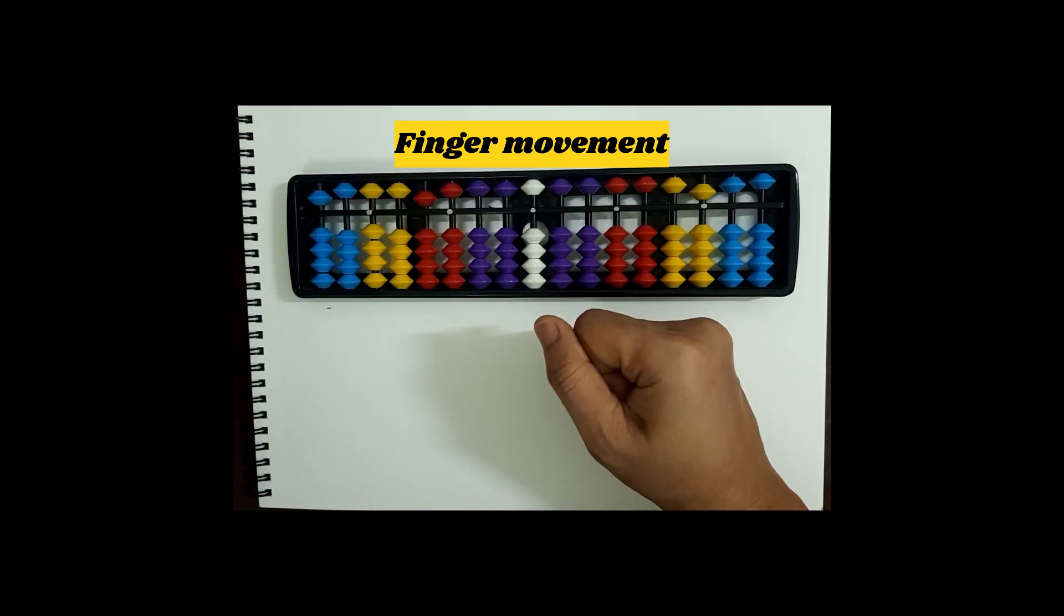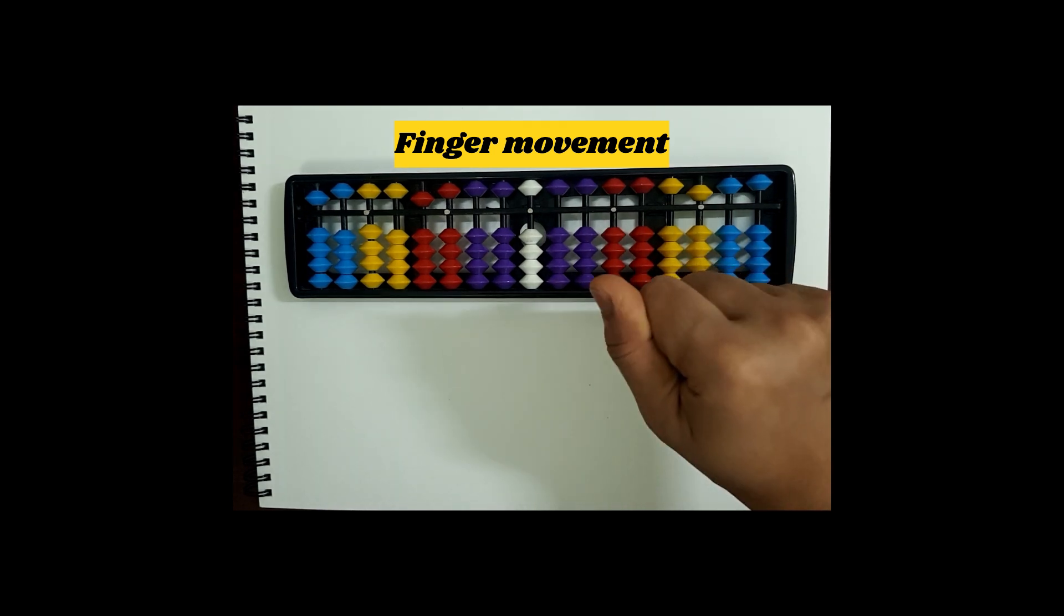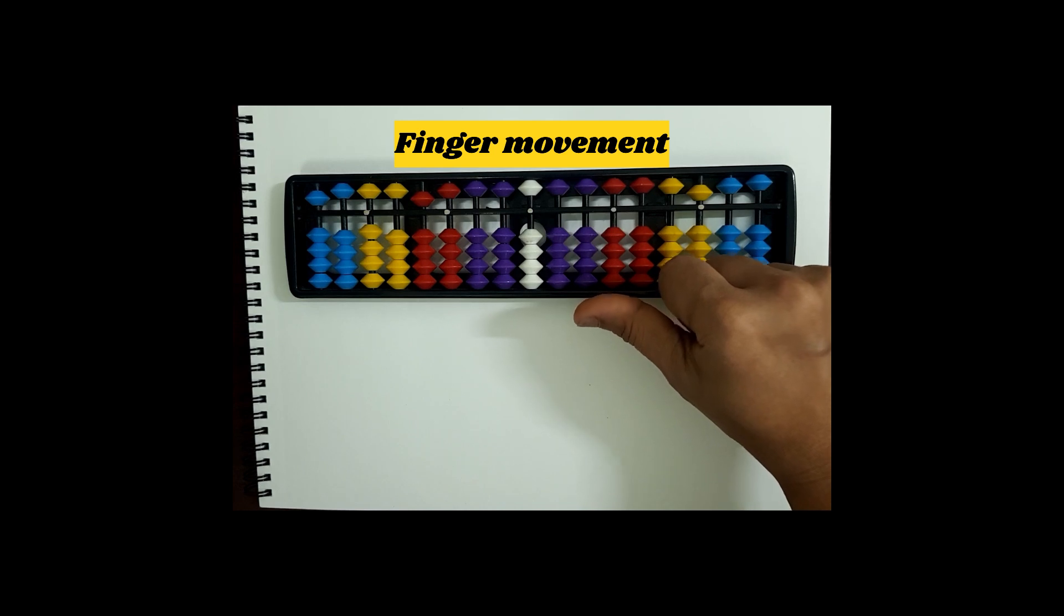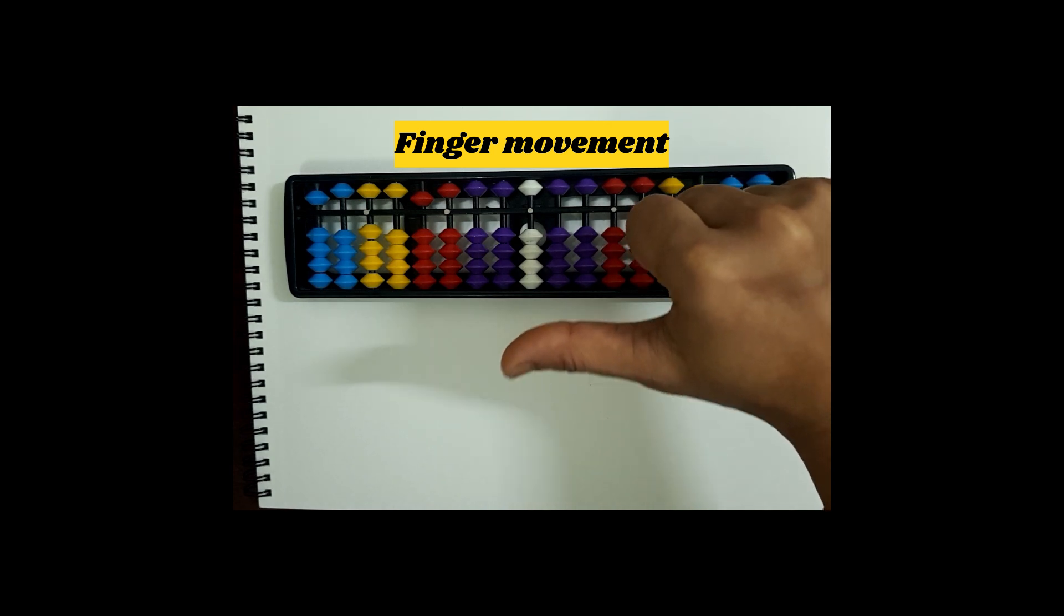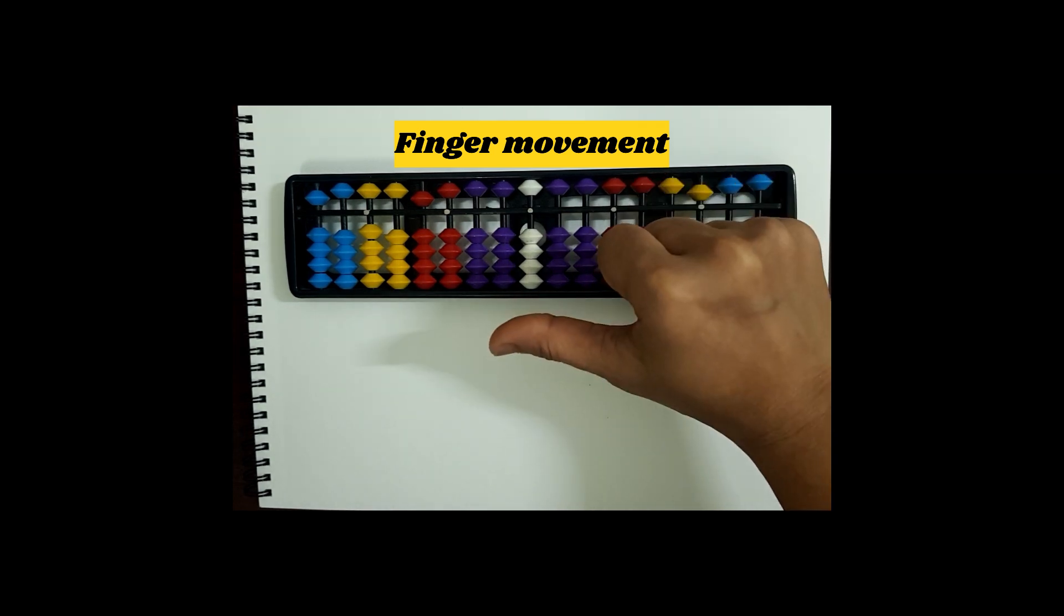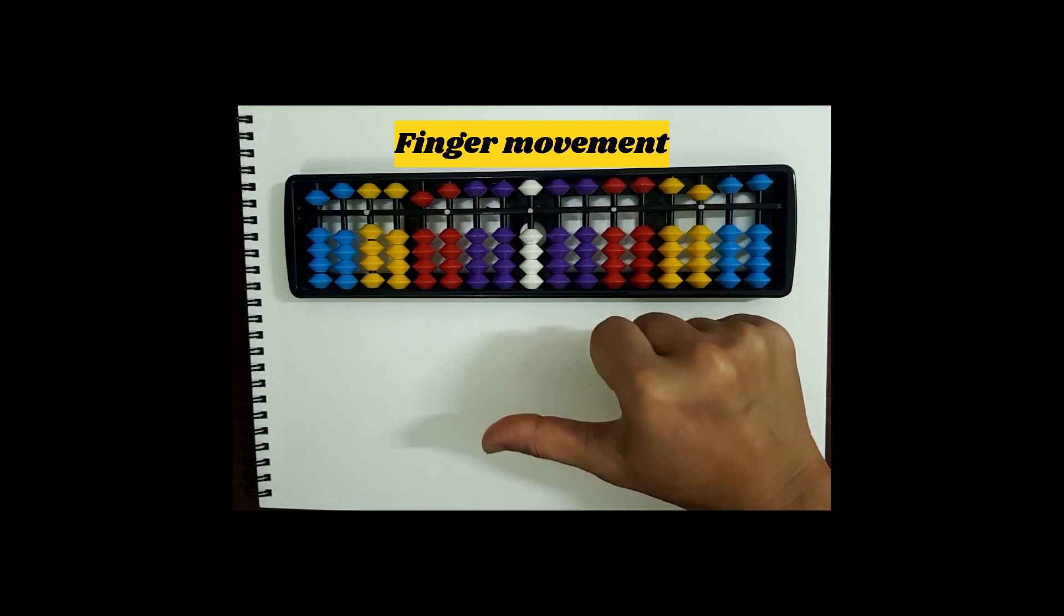We will be using our right hand for moving the beads at one rod from number 1 to 9. When we move the beads from 1, we use our thumb. Like this - this is 1. For 2, you have to move your thumb a little more down. For 3, you have to move your thumb down a little more. And for 4, like this.